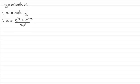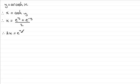What I'm going to do is multiply both sides by 2 to get rid of the 2, and so we get 2x equals e to the power y plus e to the power minus y.